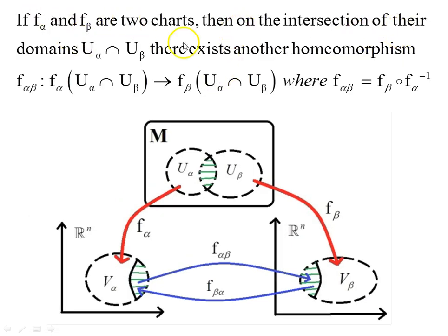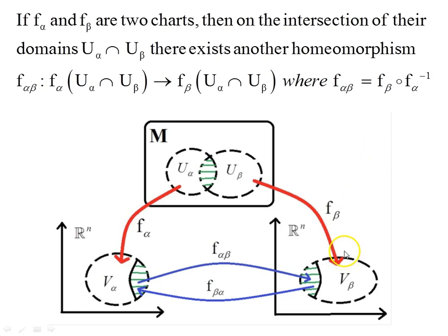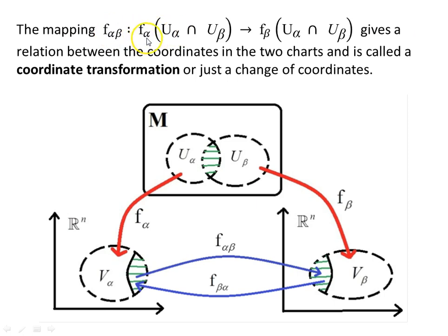When we map from U_alpha to V_alpha and from U_beta to V_beta, there will be a coordinate transformation taking us from V_alpha to V_beta or vice versa. If F_alpha and F_beta are two charts, then on the intersection of their domains U_alpha ∩ U_beta — the green part — there exists another homeomorphism F_alpha_beta, which maps F_alpha (whose domain is the intersection) to F_beta (whose domain is also the intersection), where F_alpha_beta = F_beta composed of F_alpha inverse. This gives a relation between the coordinates in the two charts and is called a coordinate transformation or change of coordinates on the manifold.